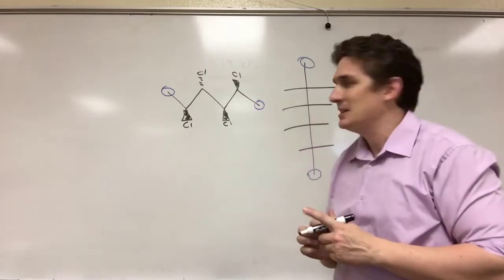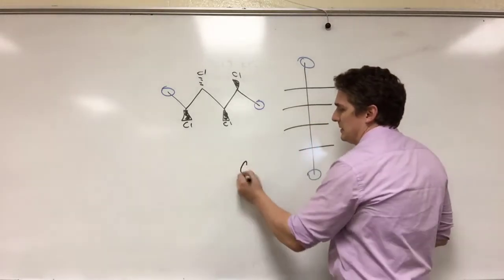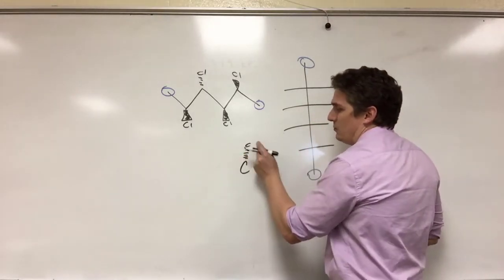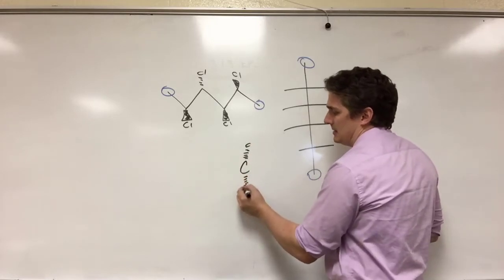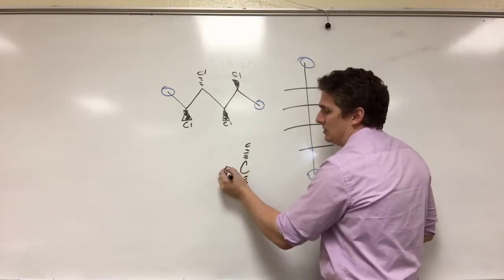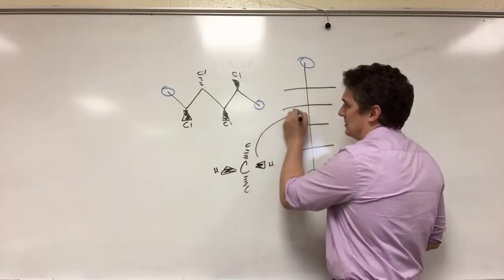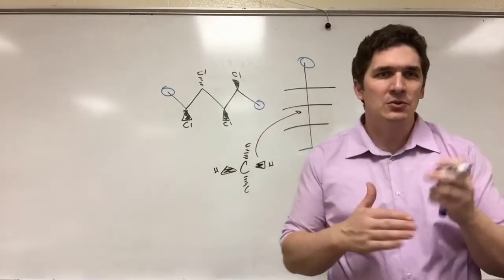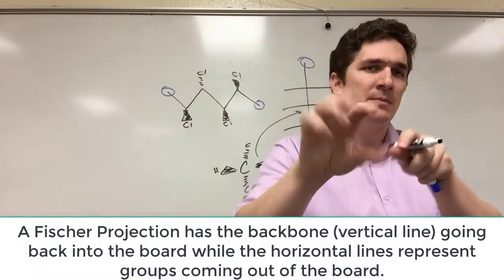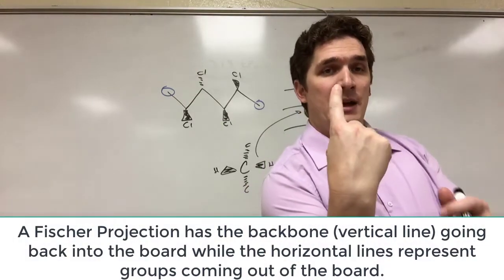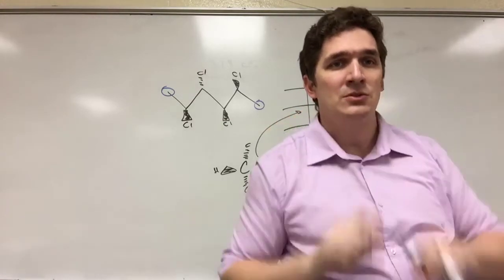But the way the Fisher Projection looks is that each of these little crosses here is that we have one carbon in the backbone going back above and below, and then we're looking between the bonds. So that's what a cross represents is that we've got carbons going back.